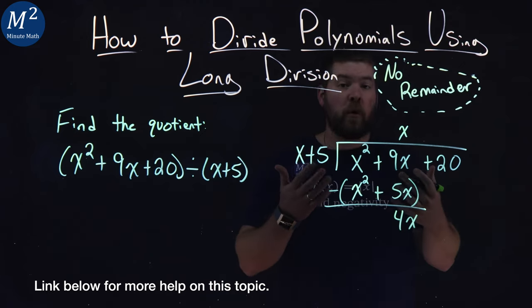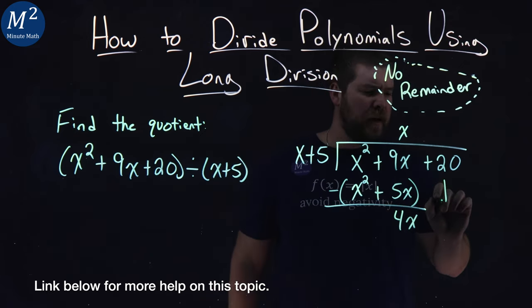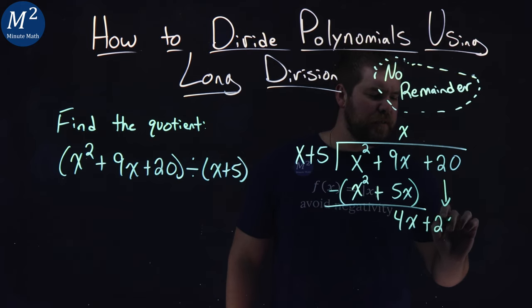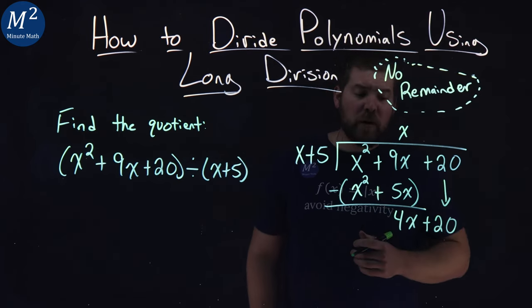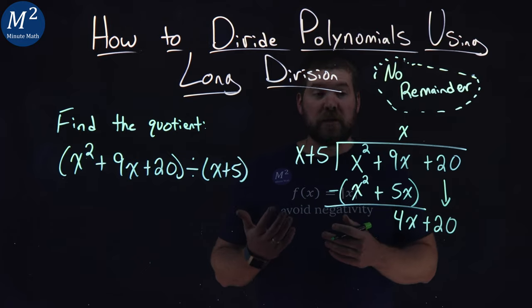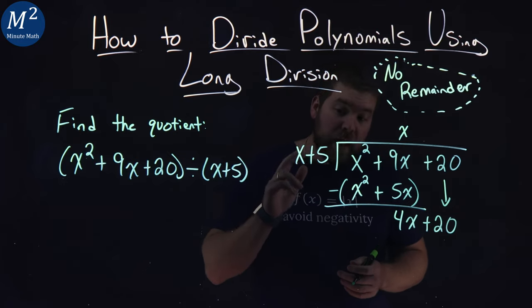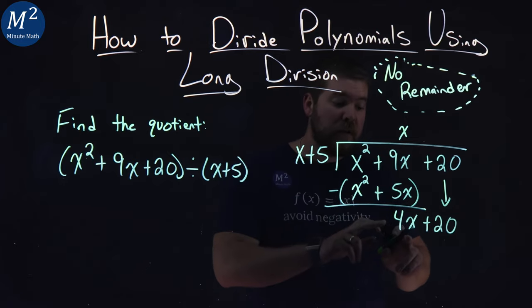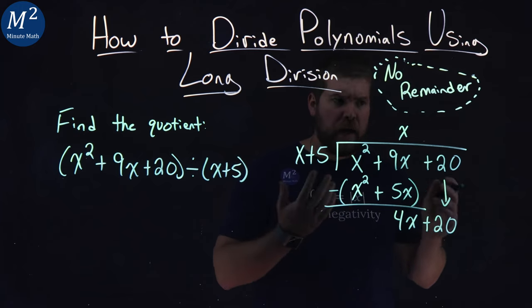From there, just like our normal long division, we bring down the plus 20. And from here, we ask ourselves the same question again. What times x gives me 4x? And that's going to be 4.